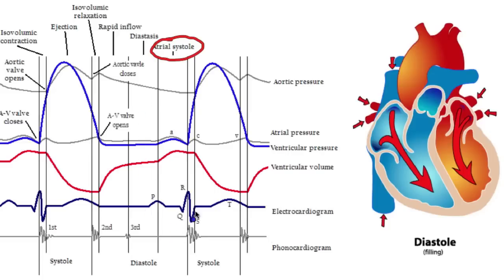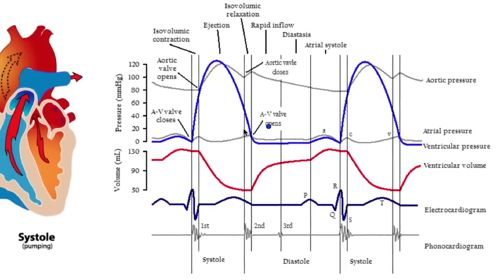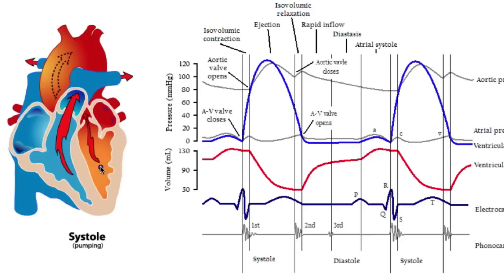We've described this section, which is the atrial systole. Then after the P wave, we get the QRS complex. The QRS complex represents the depolarization of the ventricles, and once the ventricles depolarize, that's going to cause the ventricles to start to contract — just like after atrial depolarization we get atrial contraction. After ventricular depolarization we get ventricular contraction. That is where we're starting this phase of systole. However, there is this short period called isovolumic or isovolumetric contraction.